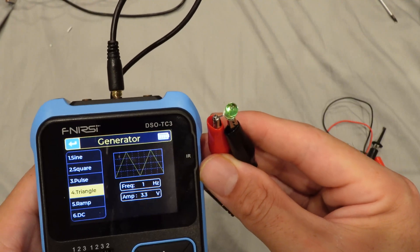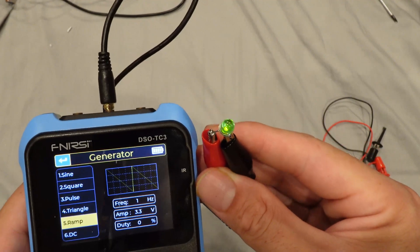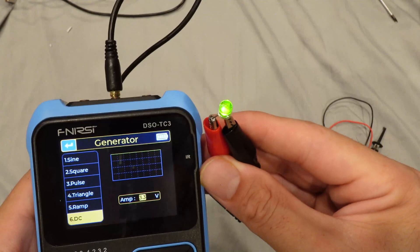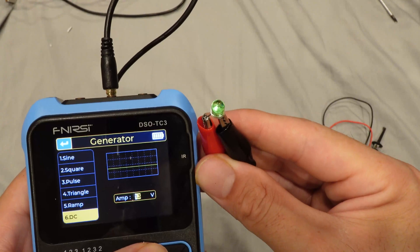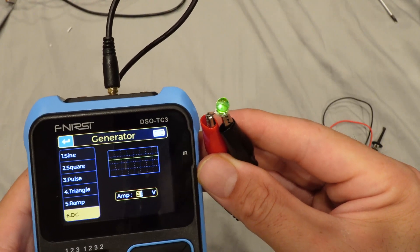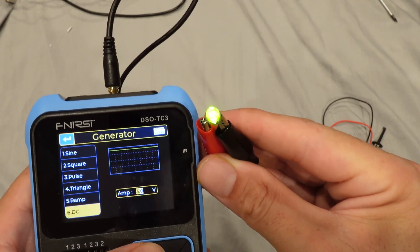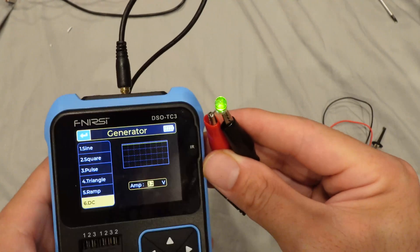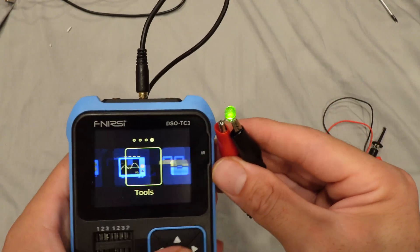So it is working. We also have the triangle, we have the ramp, and we also have the DC which you can control and bring it down. You can see the brightness of the LED is changing. So yeah, that's that.